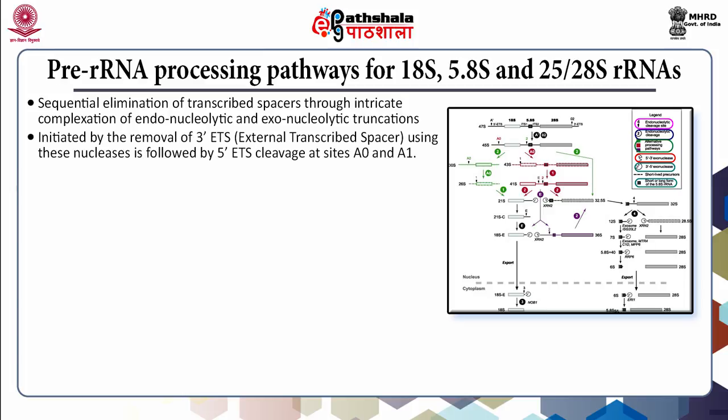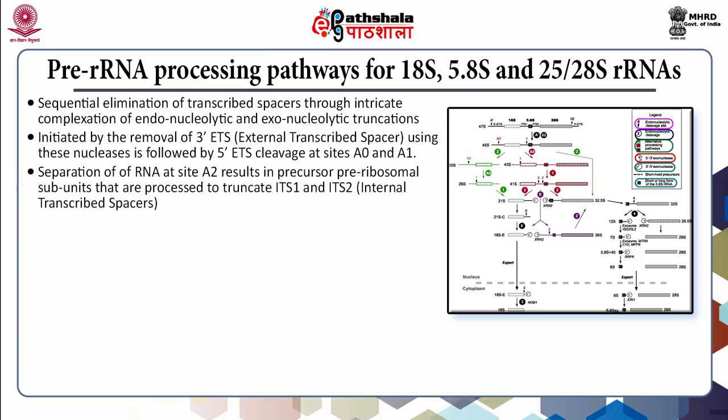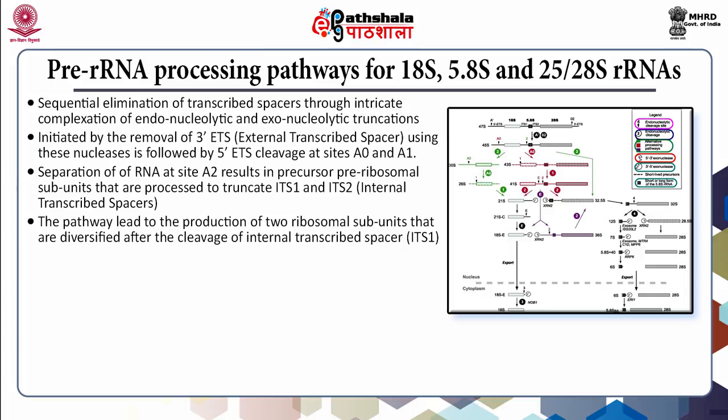The process constitutes sequential elimination of transcribed spacers through intricate complexation of endonucleolytic and exonucleolytic truncations. Initiated by the removal of the 3' external transcribed spacer using nucleases, it is followed by 5' external transcribed spacer cleavage at sites A0 and A1, then separation of RNAs at site A2. This results in precursor pre-ribosomal subunits that are processed to truncate the ITS1 and ITS2 sequences, leading to production of two ribosomal subunits diversified after cleavage of the internal transcribed spacer ITS1.